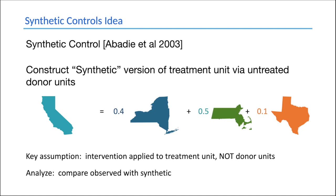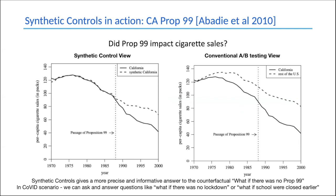The key assumption is that the intervention — Prop 99 — is applied only to the treatment unit, California, and not to the donor states. We train this model pre-application of Prop 99. Beyond 1988, we compare the synthetic version of California with actual California. If you see a difference, then Prop 99 had an impact.